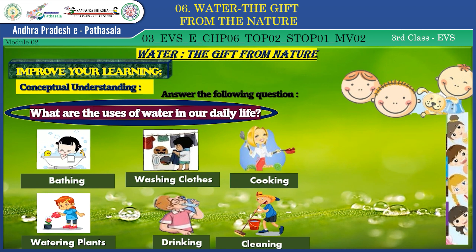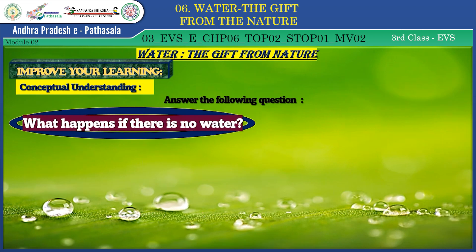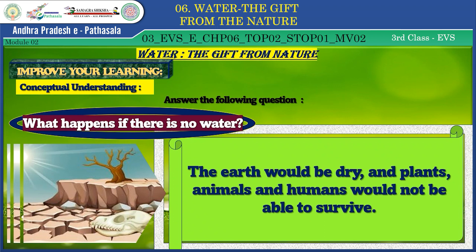Children, I am going to check your understanding. Answer this: what happens if there is no water? The earth would be dry, and plants, animals and humans would not be able to survive. It is scary to imagine. So it is our responsibility to conserve water very carefully.